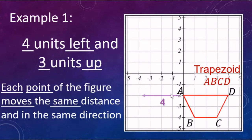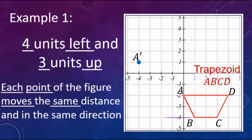Starting with vertex A, we go four to the left and three up. The new vertex A prime is going to be at negative four, one for its coordinate point. After we do the first one, we move on to the next one. B is going to go four to the left and three up — B prime right there. Next, vertex C goes four to the left and three up — C prime.